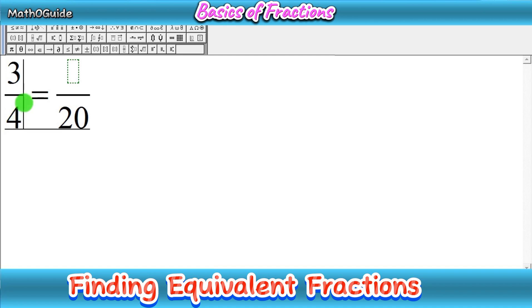You can see that we have the smaller fraction on the left hand side, 3 over 4. After that you have to check which part of fraction is complete and which part is missing. In the first fraction we have numerator 3, but in second fraction we have a missing numerator. In first fraction we have denominator 4 and in second fraction we have denominator 20.